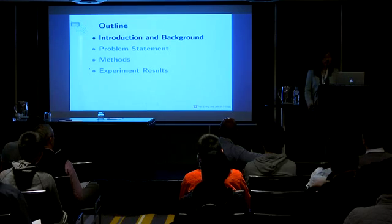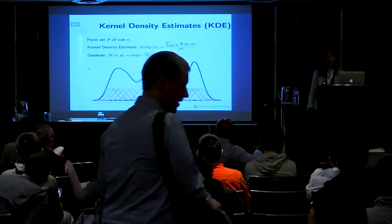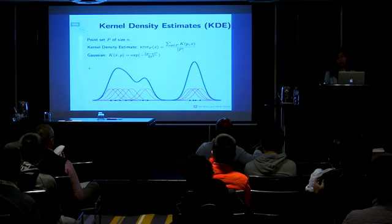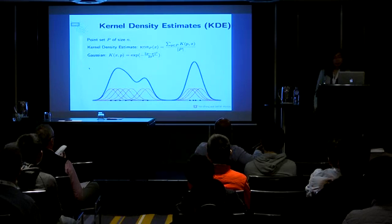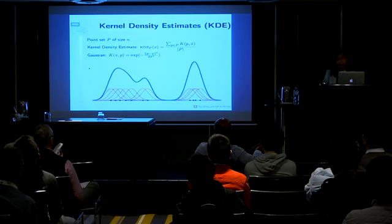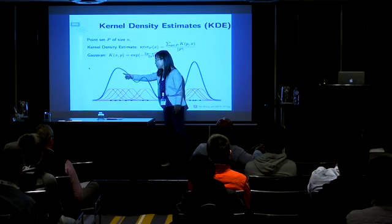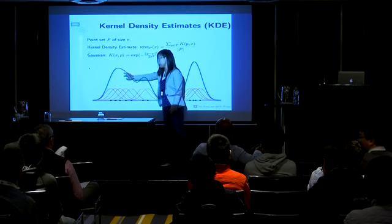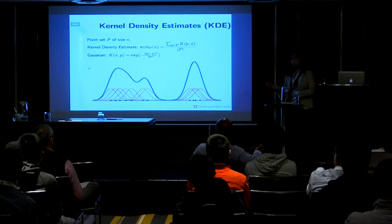I will introduce some background. What is the Kernel Density Estimation? Given a point set of size n from an unknown distribution, we want to find how to construct this unknown distribution. A typical nonparametric way of doing that is through Kernel Density Estimation. Essentially, for every point, we put a kernel on it — for example, the Gaussian kernel — and the Kernel Density Estimation at each query point is the average of the kernel values at that point. For this 11-point set, the Kernel Density Estimation looks like this.